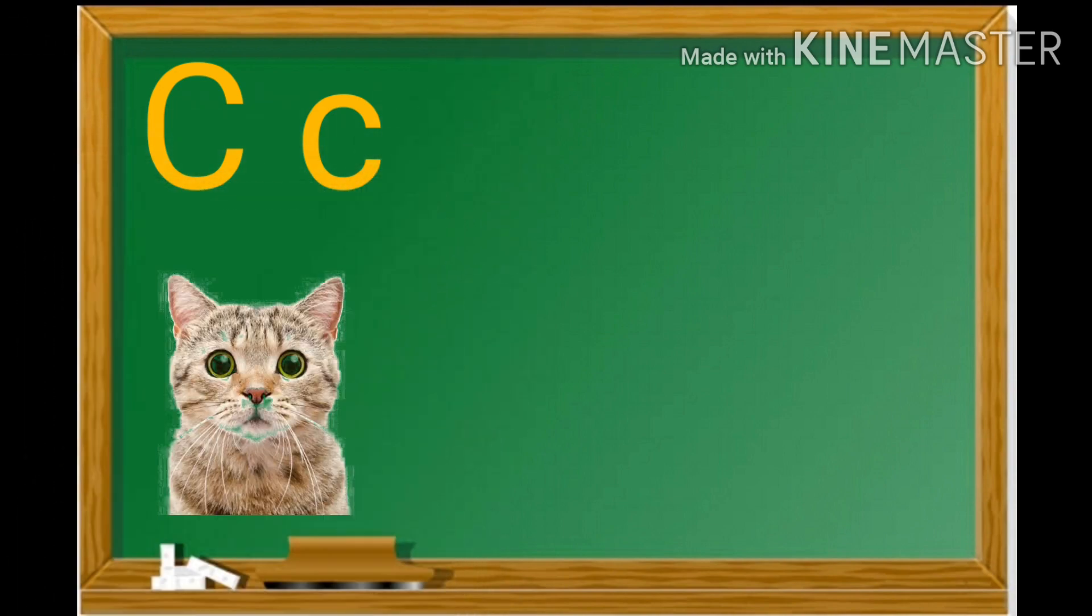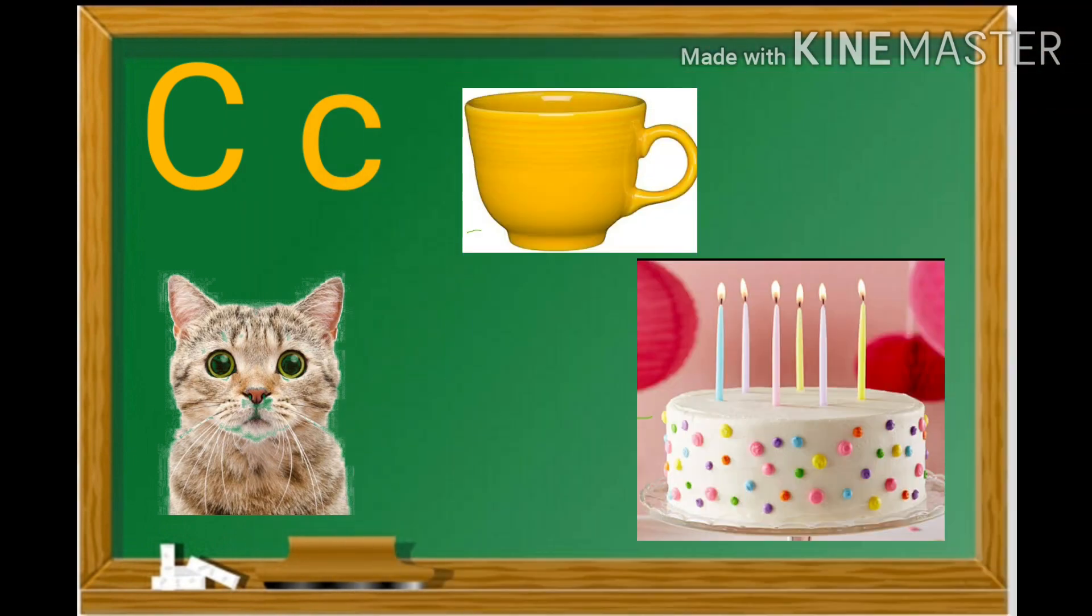The next letter is C. Mama C and Baby C. Sound of C is K. Repeat K. Cat. K. Cup. K. Cake.